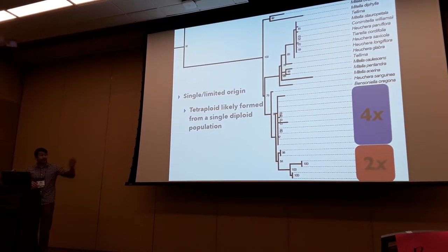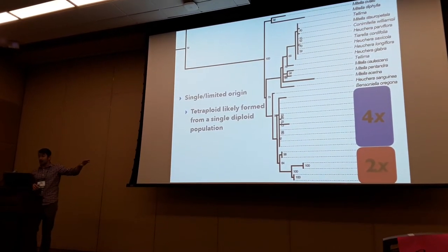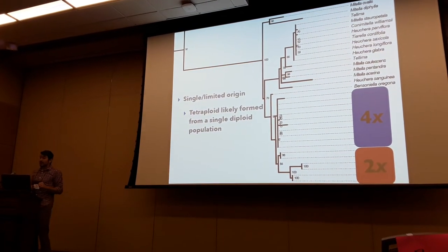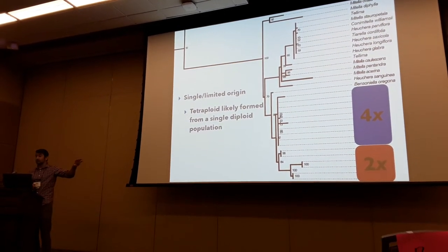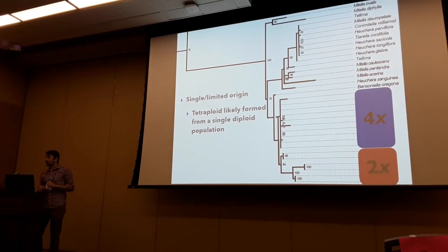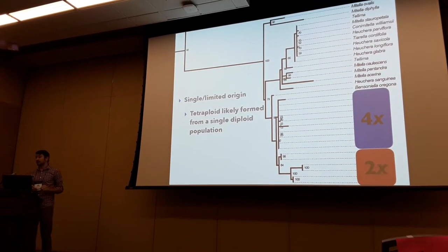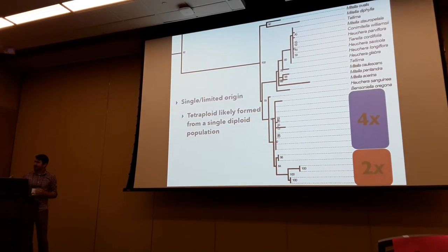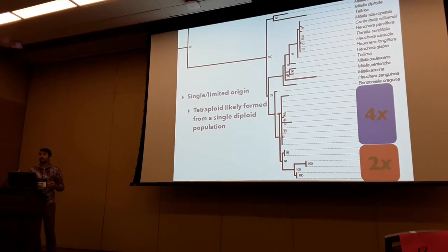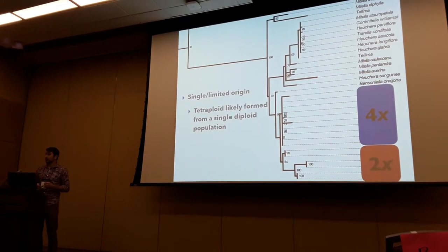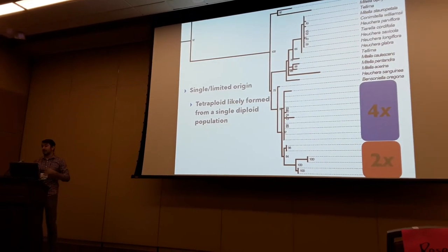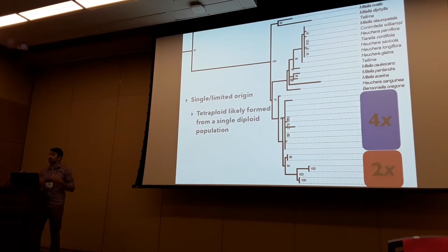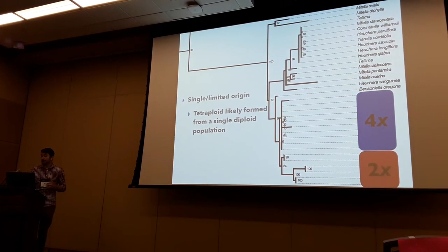If we look at a phylogeny that includes representatives from multiple tetraploid and multiple diploid populations, the tetraploid and diploid populations are reciprocally monophyletic, and there's very little sequence divergence between different tetraploid populations. This is consistent with the tetraploid arising from one ancestral diploid population — we're not dealing with the common polyploid scenario of multiple formations of origin that would further complicate comparisons.